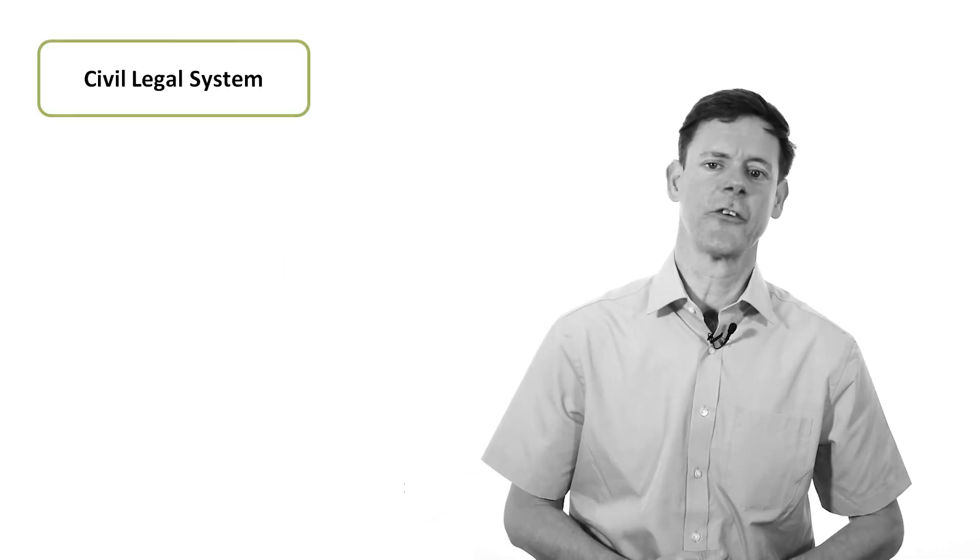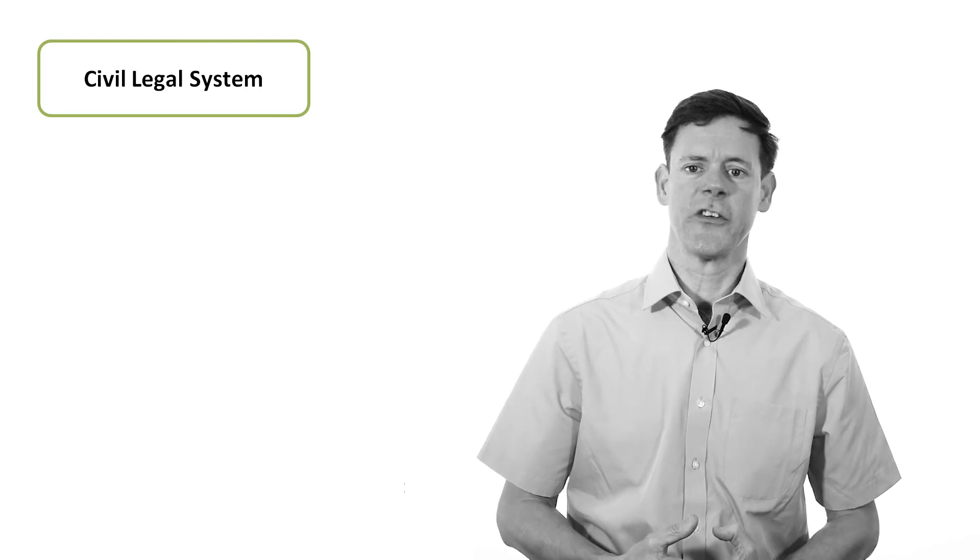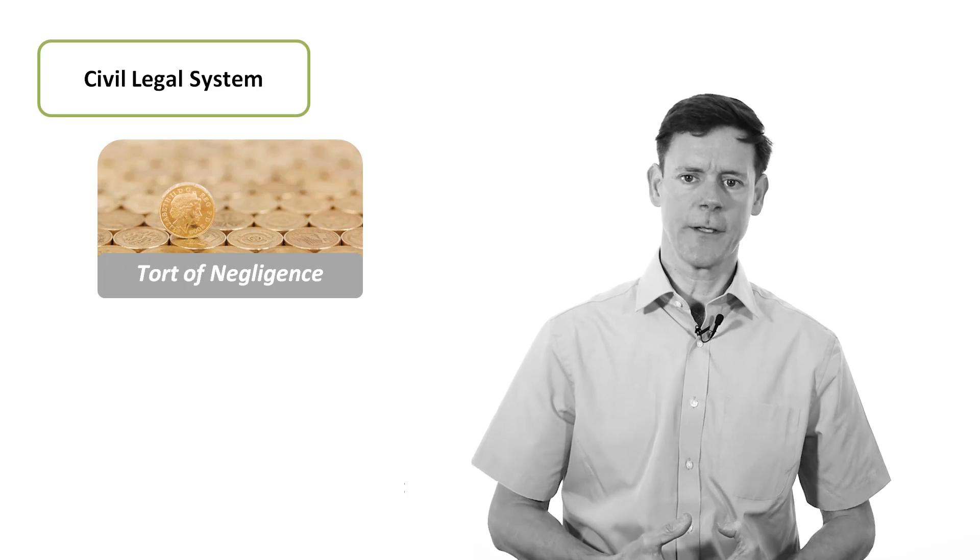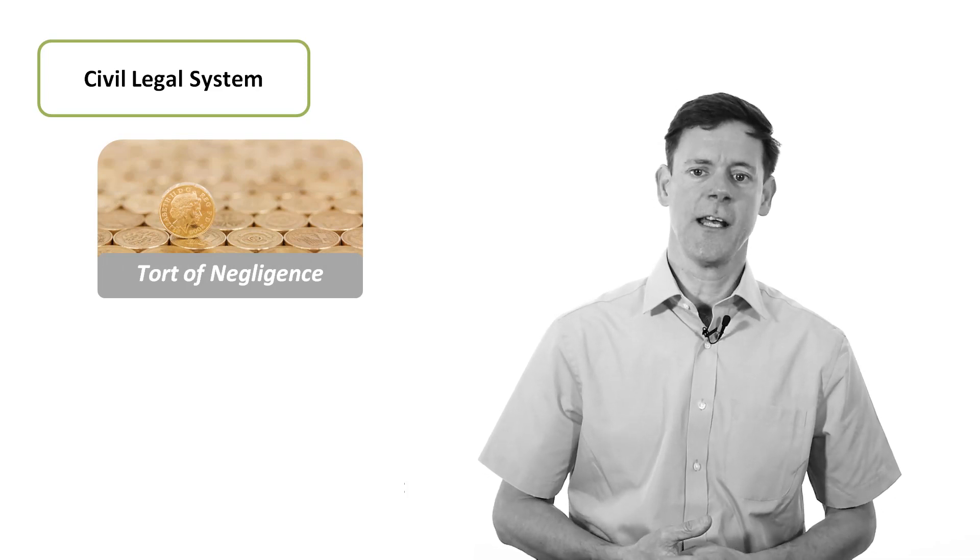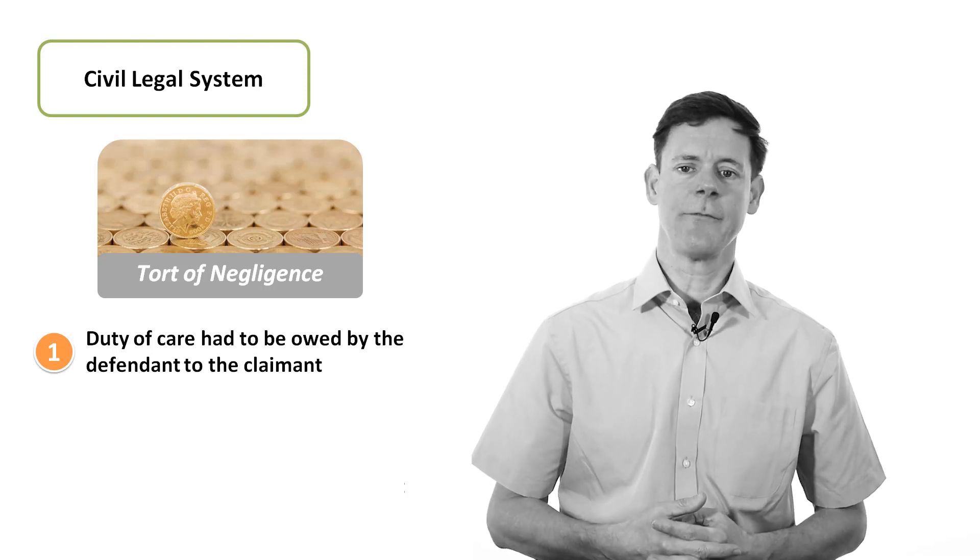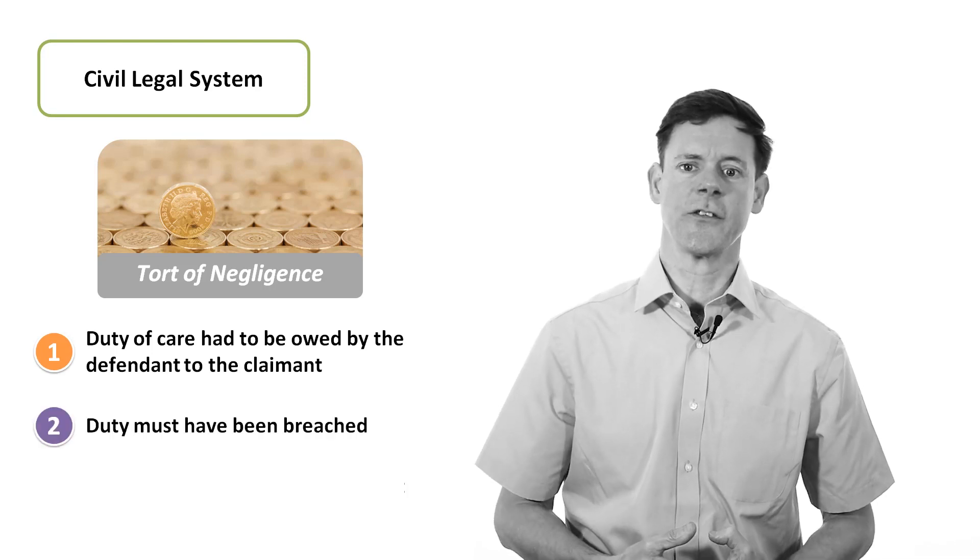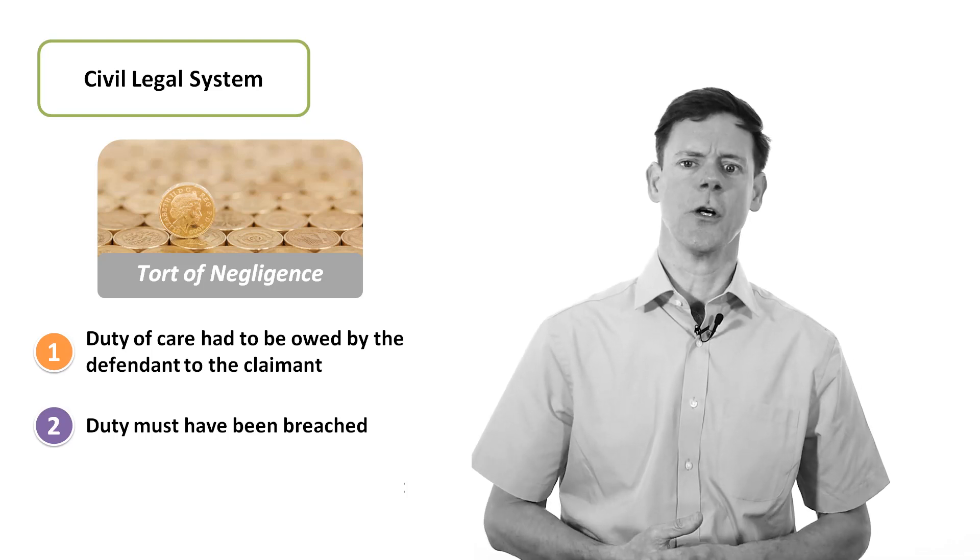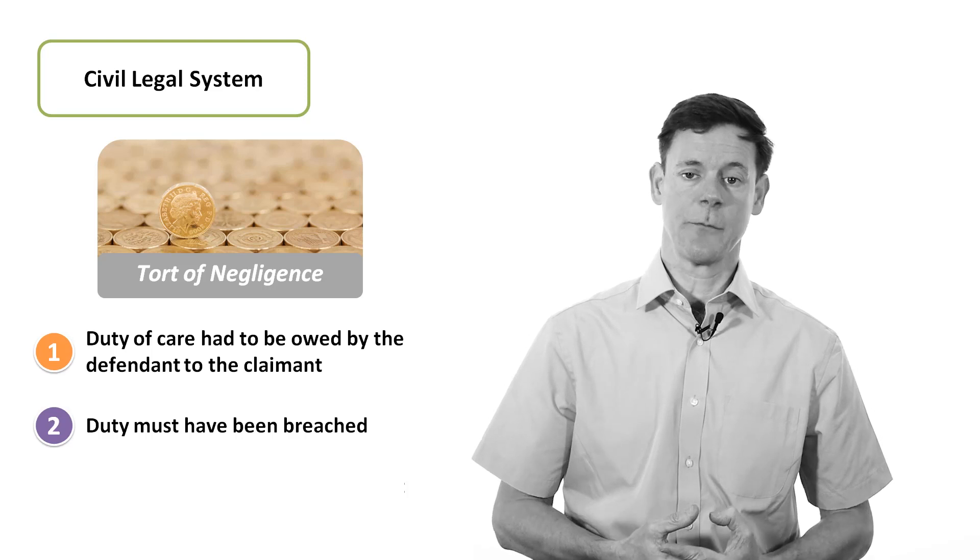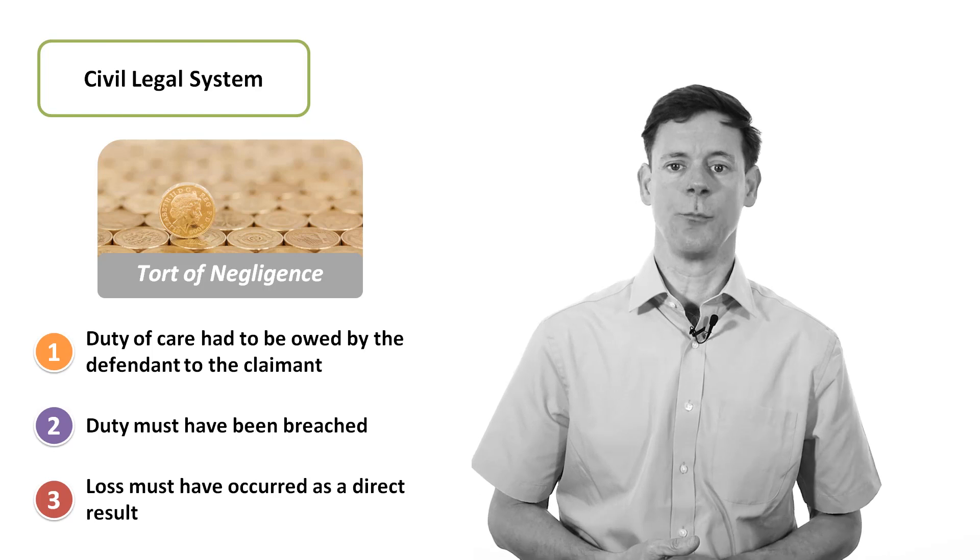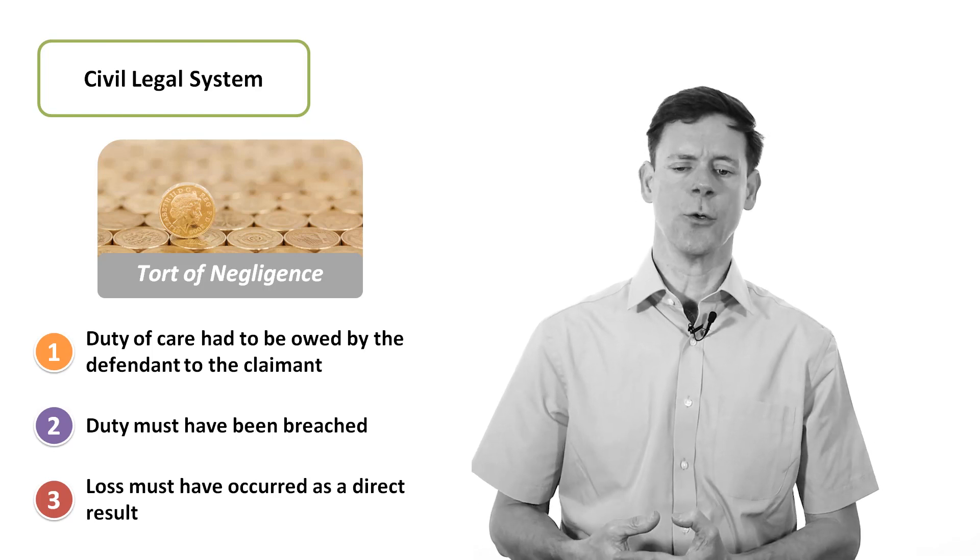In contrast to the criminal legal system, the civil legal system is concerned with claims for compensation. The civil system is all based on tort of negligence. In order for negligence to be proven, the claimant has to demonstrate that the defendant owed them a duty of care, and they have to demonstrate that the defendant breached their duty of care. They failed to do something which a reasonable person would have done. And they have to demonstrate that that breach has led directly to the loss that they're complaining of. In other words, to their personal injury or to their ill health.